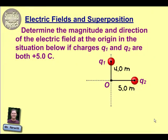Okay, Sioux Falls physics teachers are here. We're going to be looking at electric fields and superposition in this problem. We want to determine the magnitude and direction of the electric field at the origin in the situation given below for the two charges Q1 and Q2. Note that both charges have a plus 5.0 Coulomb charge, but they are not at the same distance from the origin. We need to figure out the electric field for each charge and then look at what the resultant electric field would be from those charges.